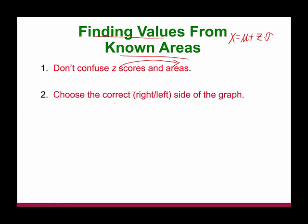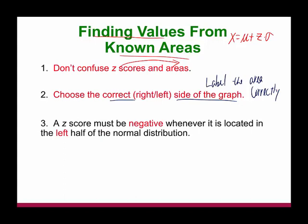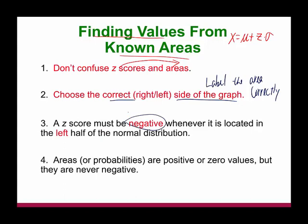Also, choose the correct side of the graph and label the area correctly — that's important. Sometimes you're looking for the area to the left, sometimes to the right, sometimes in between. The z-score must be negative whenever it's located in the left half of the normal distribution, and positive when located in the right half. Areas are positive or zero, because we're talking about probability — area is a probability, so they are never negative.